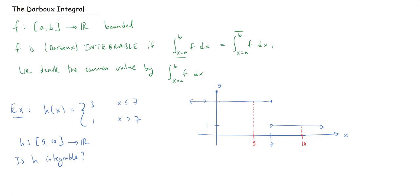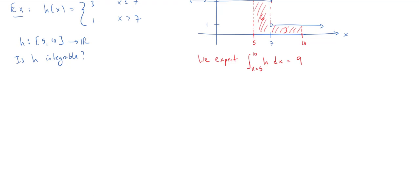If I want to integrate from 5 to 10, what I should be asking for is can I compute the area under the curve? Even though there's this little discontinuity, it's still pretty easy just to build these two rectangles up. This first one has height 3 and base 2, so this should be 6. This has height 1 and base 3, so this should be 3. We expect that if we integrate from 5 to 10 this function h, we should get 9. But let's go through the actual definition and see if this really works.